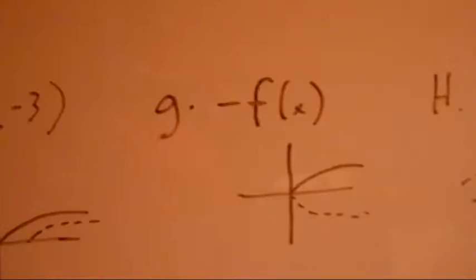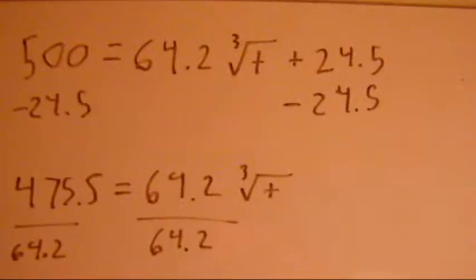F, f of x minus 3 has the opposite effect. F to the negative 1 of x, mirrors the line on the x-axis. H, f to the negative 1 of x, mirrors the line on the y-axis. Now on number 3, which in my opinion is the easiest.